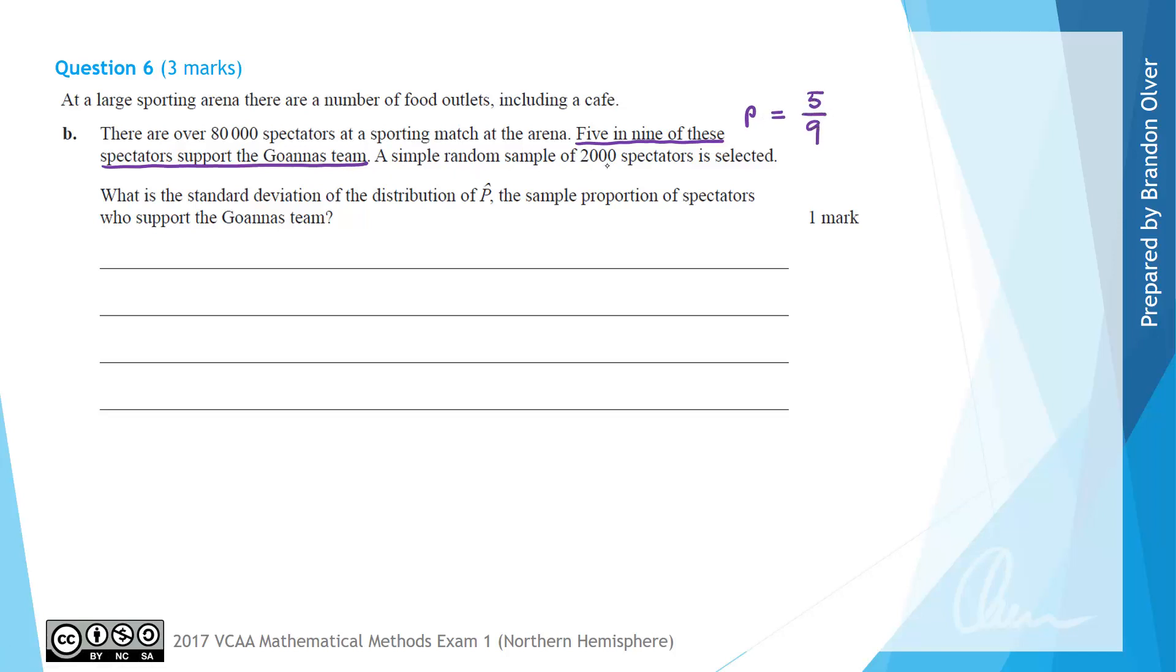A simple random sample of 2,000 spectators is selected and we are asked what is the standard deviation of the distribution of p-hat, the sample proportion of spectators who support the Goannas team.